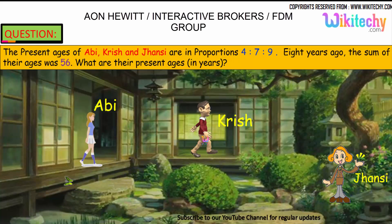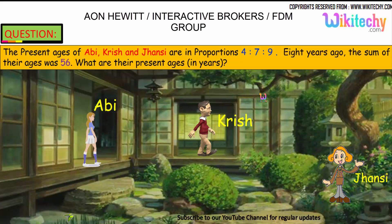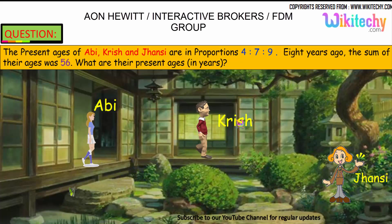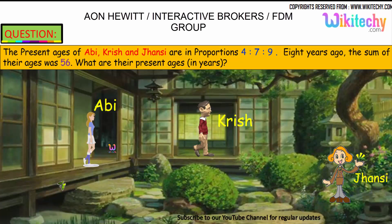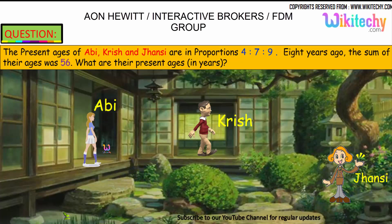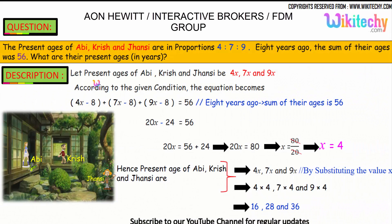Let's move on to the next problem. Abhi, Krish, and John are in the proportion 4 is to 7 is to 9. Eight years ago, the sum of their ages was 56. What are the present ages? The present ages of Abhi, Krish, and John are in proportion 4:7:9, so let them be 4x, 7x, and 9x.